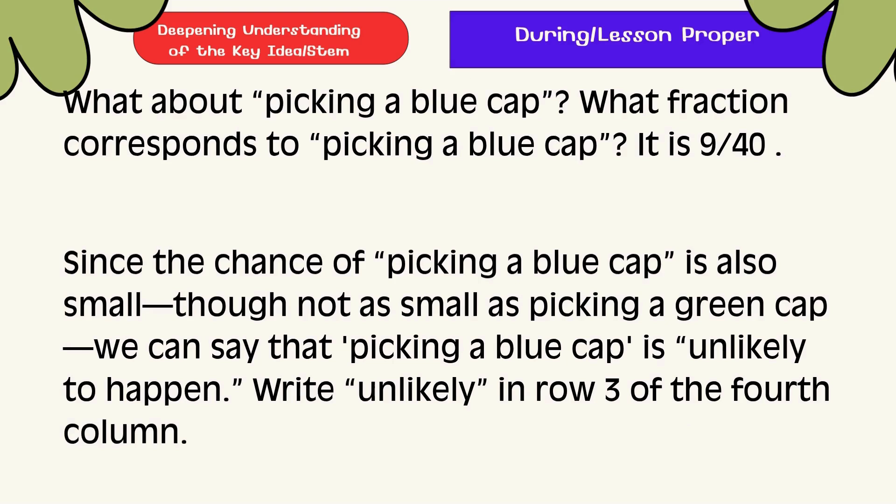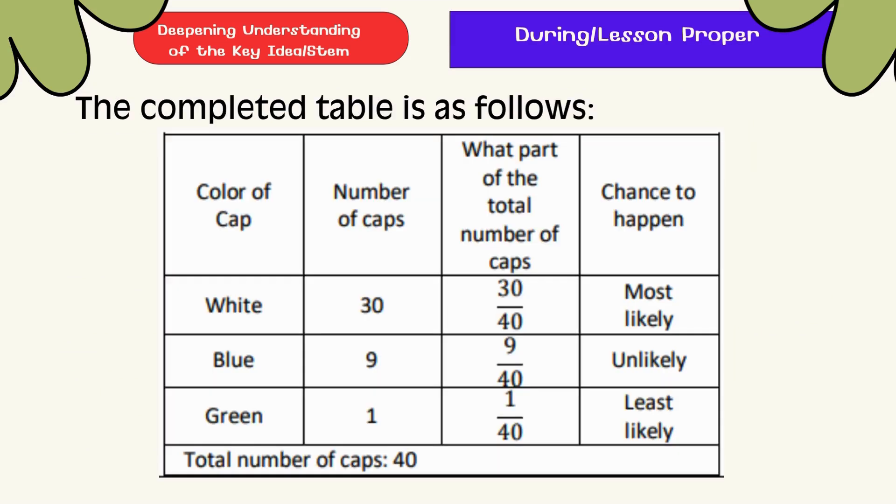What about picking a blue cup? What fraction corresponds to picking a blue cup? It is 9 over 40. Since the chance of picking a blue cup is also small, though not as small as picking a green cup, we can say that picking a blue cup is unlikely to happen. Write 'unlikely' in row 3 of the 4th column. The completed table is as follows.